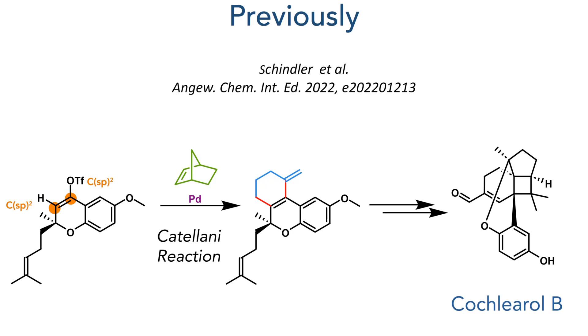Conceptually, this can be thought of as an extension of the Catellani reaction, which can be used to forge bonds to two contiguous SP2 centres, such as we saw utilised in the total synthesis of Cochlear Lb.